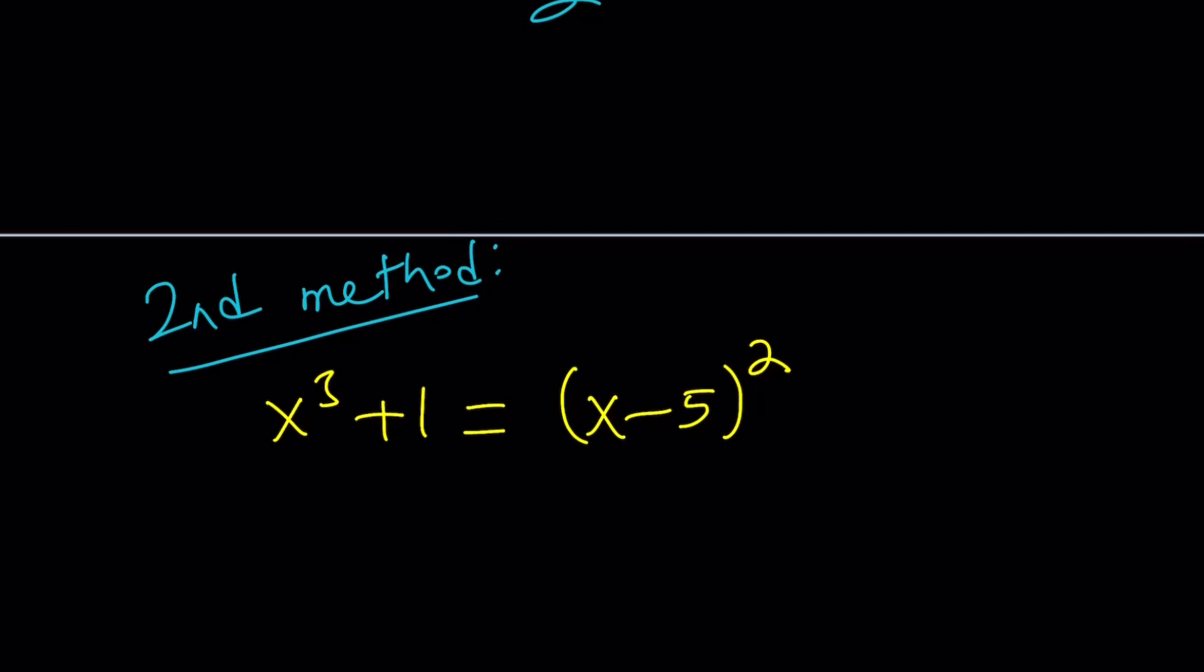So we said that the right hand side is a perfect square and left hand side is a sum of two cubes, and that didn't seem to help us because if you factor x cubed plus 1, you're going to get x plus 1, and that's not one of the factors of x minus 5 squared, right? So that's not helpful. But we can do a little bit of something to make it work. How do we do that?